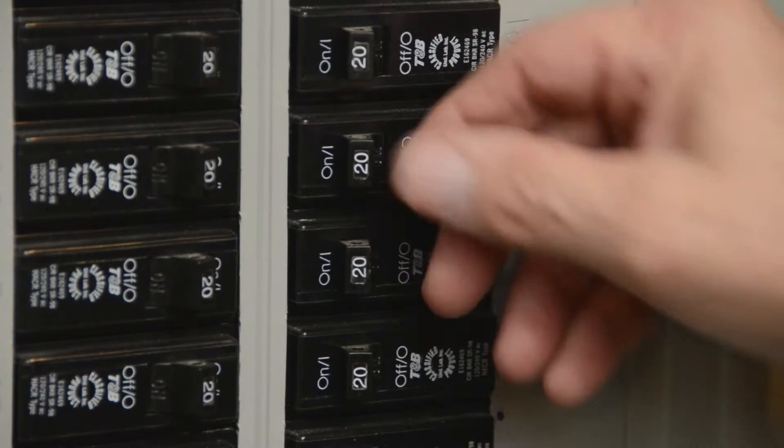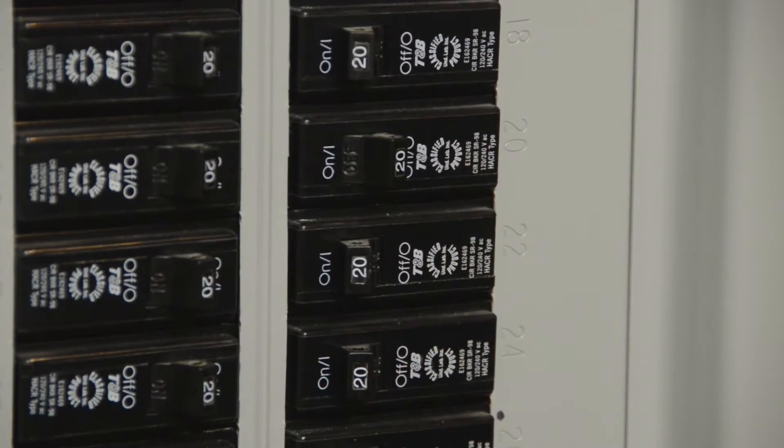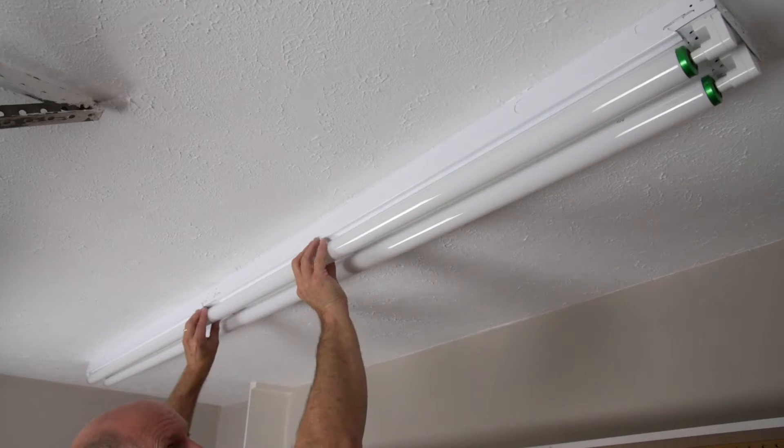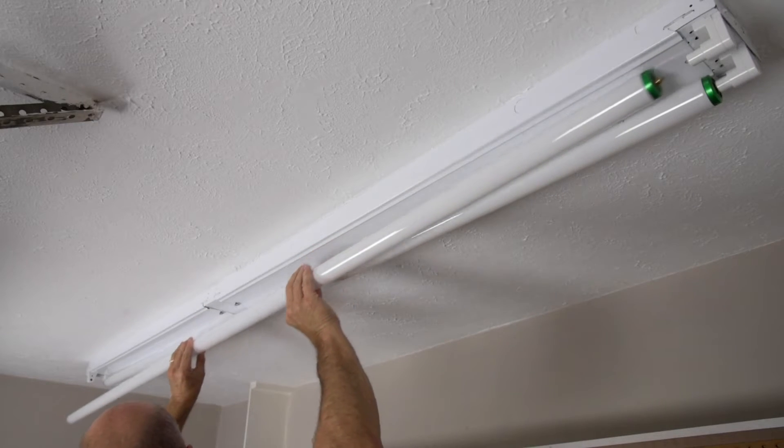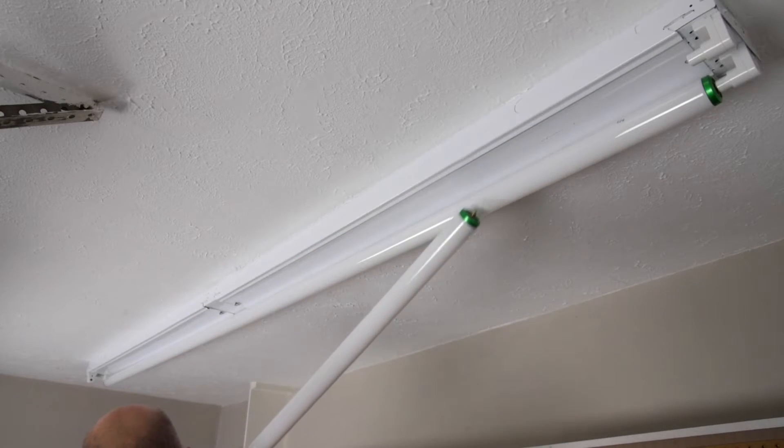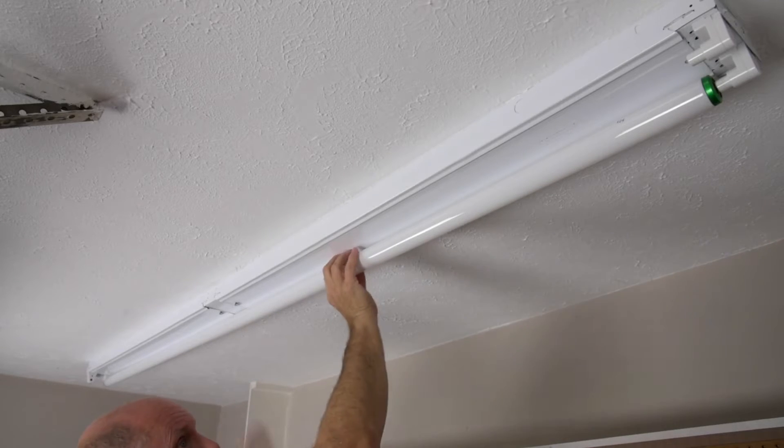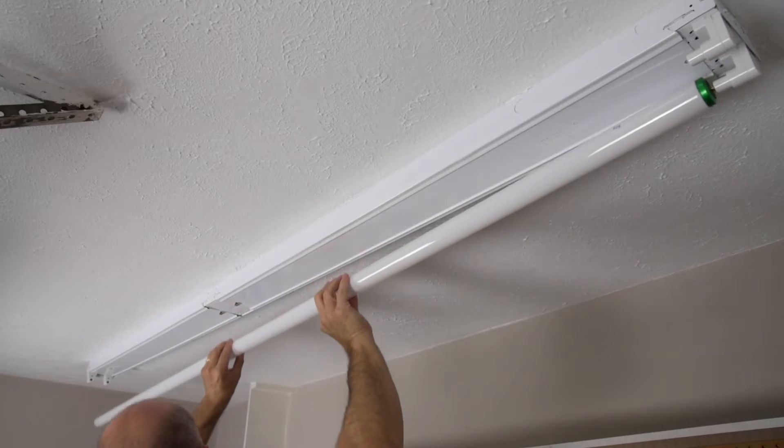With safety in mind, our first step is to turn off the power. Next, we'll remove the existing fluorescent tubes from the fixture we're updating. Please recycle these tubes in accordance with local municipal requirements.